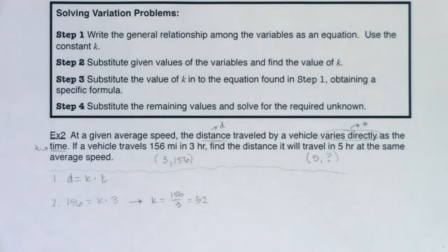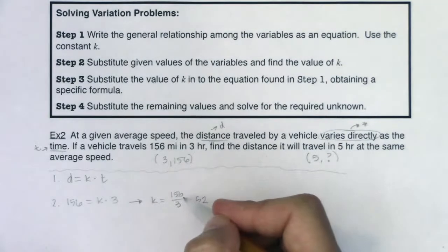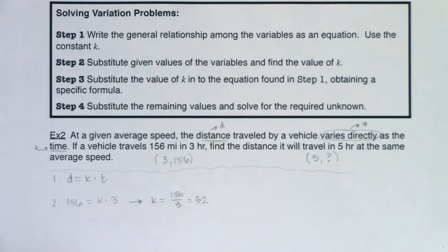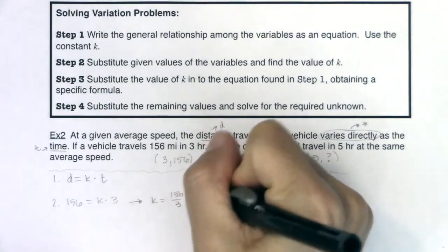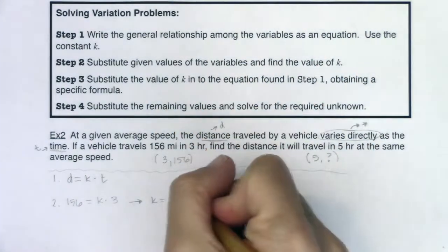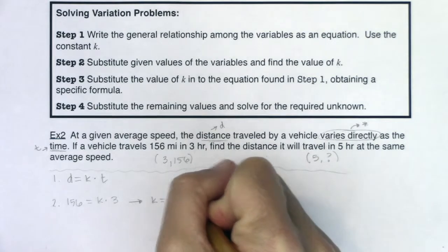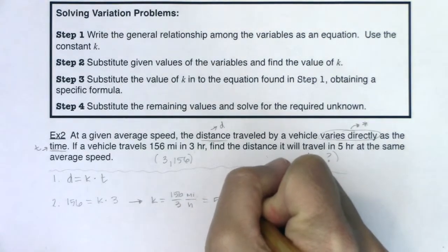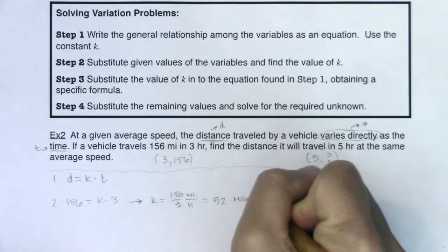Now before we move too much further, I just want you to think what would the units of this number be? Right, and let me erase this just so we can do a quick little unit analysis. This would have been 156 miles, this would have been three hours. So this is ultimately 52 miles per hour.